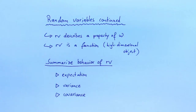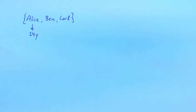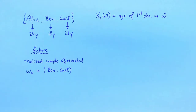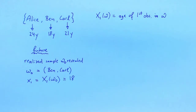Let's look again at the population consisting of Alice, Ben, and Carl. Let's assume that Alice is 24 years old, Ben is 18 years old, and Carl is 21 years old. As before, x1 is the random variable that gives the age of the first observation. In the future, we have drawn the sample and we know what it is. Let's assume that we have drawn the sample Ben-Carl. The realized value of x1, evaluated at the realized sample, is 18, since Ben is 18 years old.